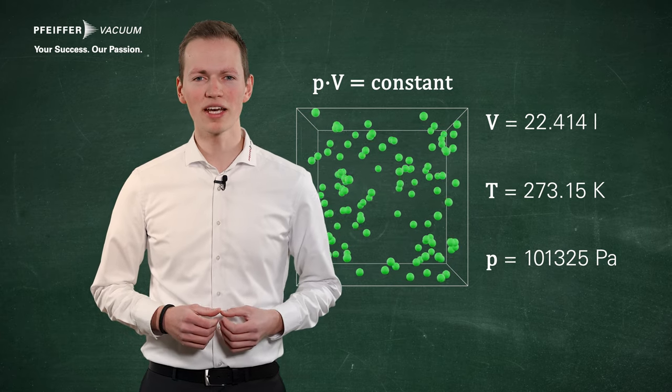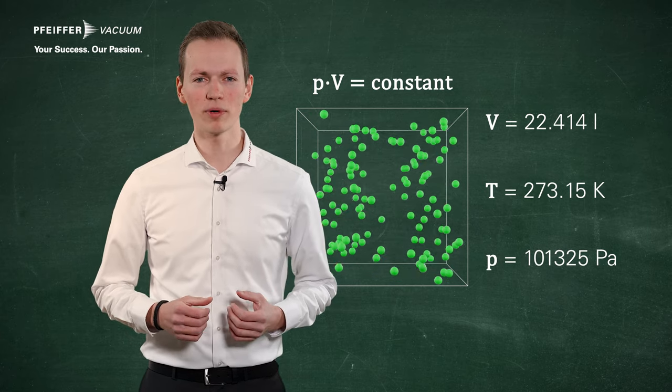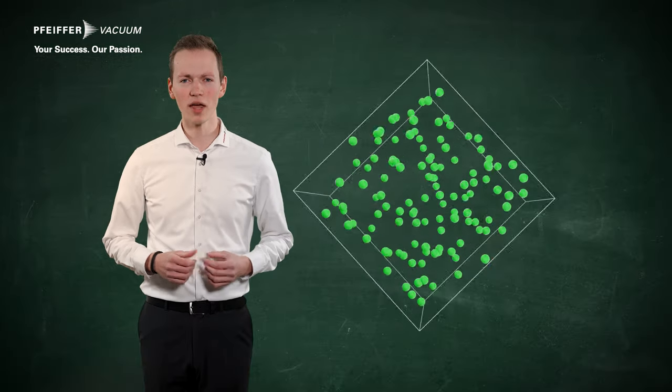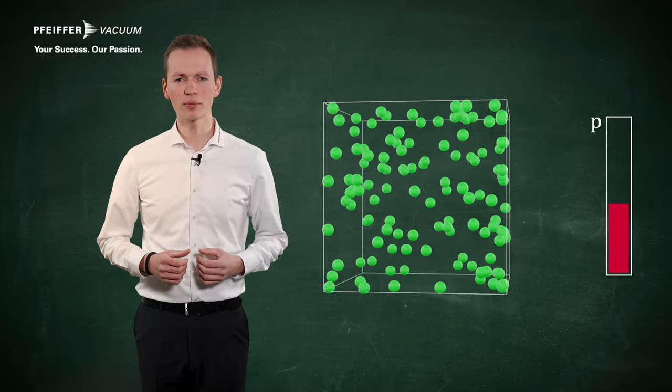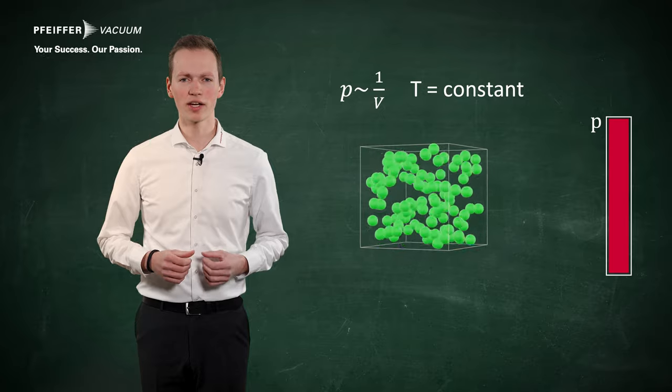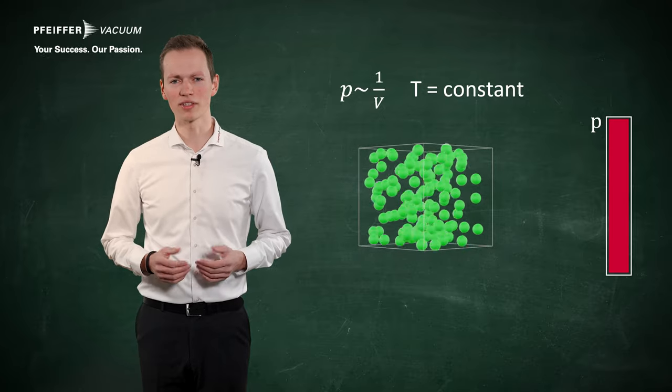The formula shows that the product of pressure and volume of a given quantity of gas is constant under the same temperature. Thus, if the volume of a room is reduced and both the gas quantity and temperature are kept constant, the pressure increases.